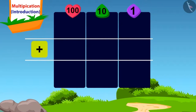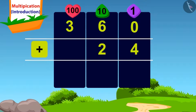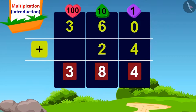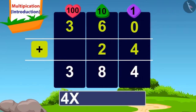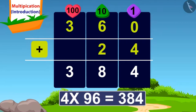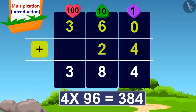We will write this answer here. Now it is very easy. If we add 24 to 360, what do we get? 384. Doing this, we got the answer to our question: 4 times 96 is 384. A total of 384 ants will be required.